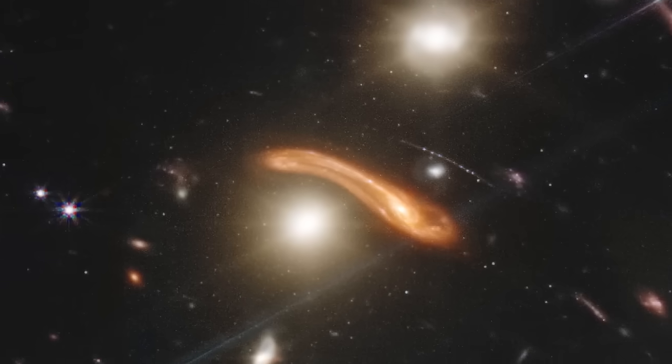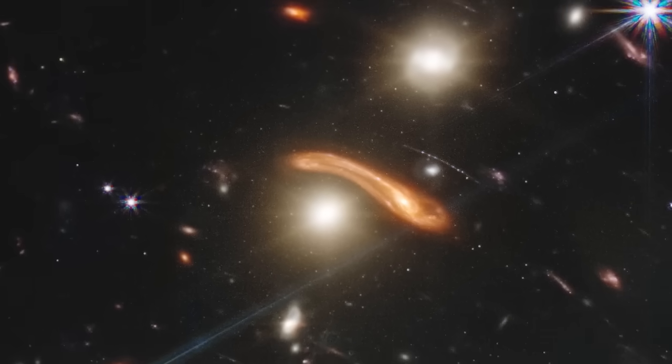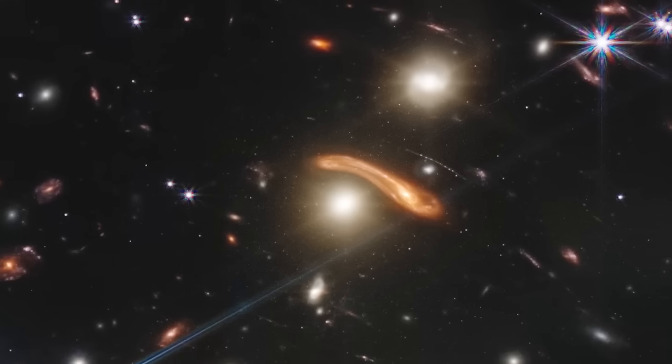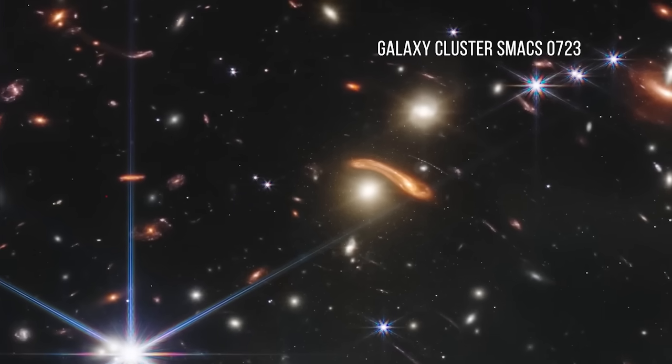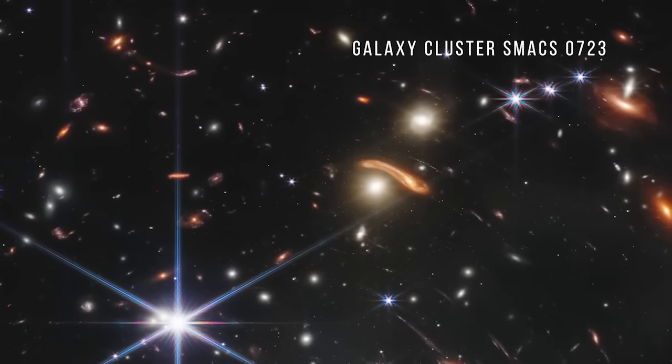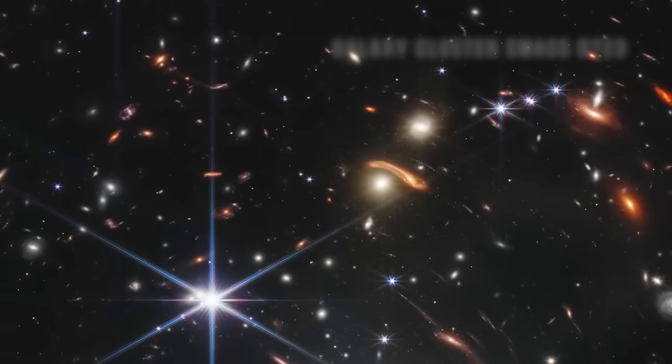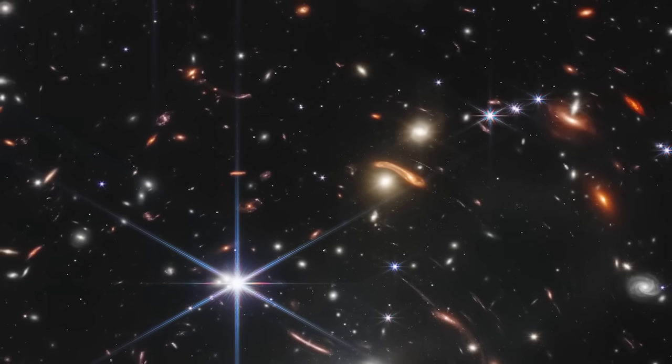The first image from the James Webb Telescope was unveiled on July 12, 2022. It is a photograph of the galaxy cluster SMACS-0723, as it was 4.6 billion years ago.